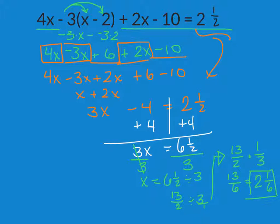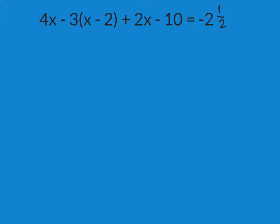Now I know that this part right here is going to be identical when I look over here on this one. So, I know that this is going to be 3x minus 4 equals, in this case, negative 2 and 1 half.